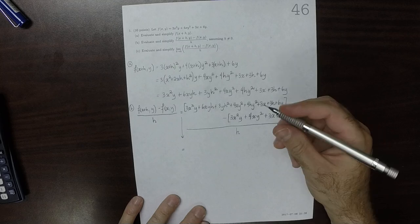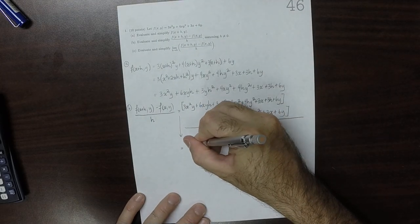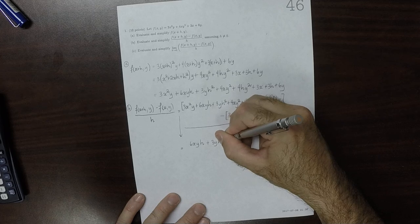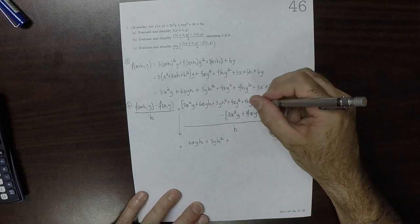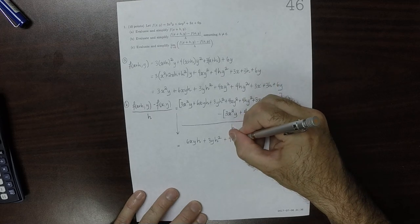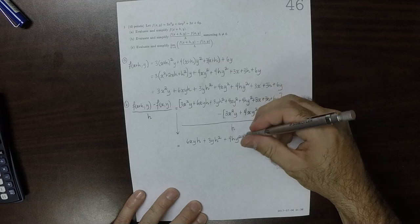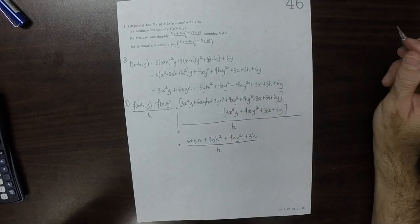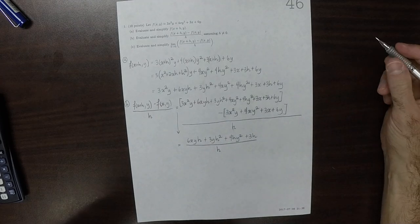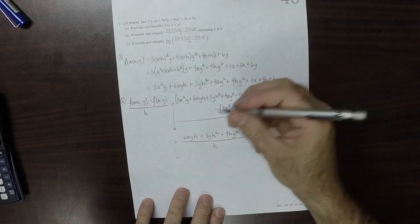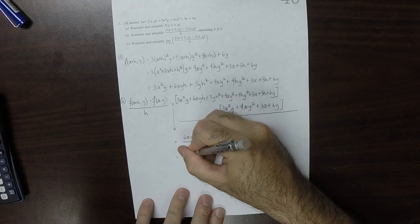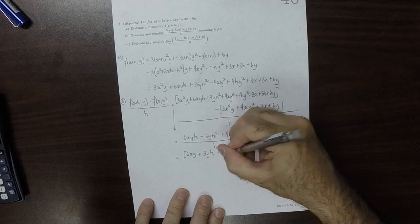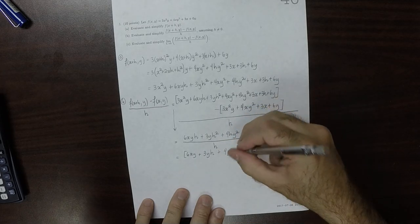We're left with only terms that happen to have h's with them. So we have 6xyh plus 3yh squared plus 4hy squared plus 3h over h. So all the rest of the terms canceled away. Notice that all of the terms in the numerator have an h in them. So we can factor an h out and obtain 6xy plus 3yh plus 4y squared plus 3.